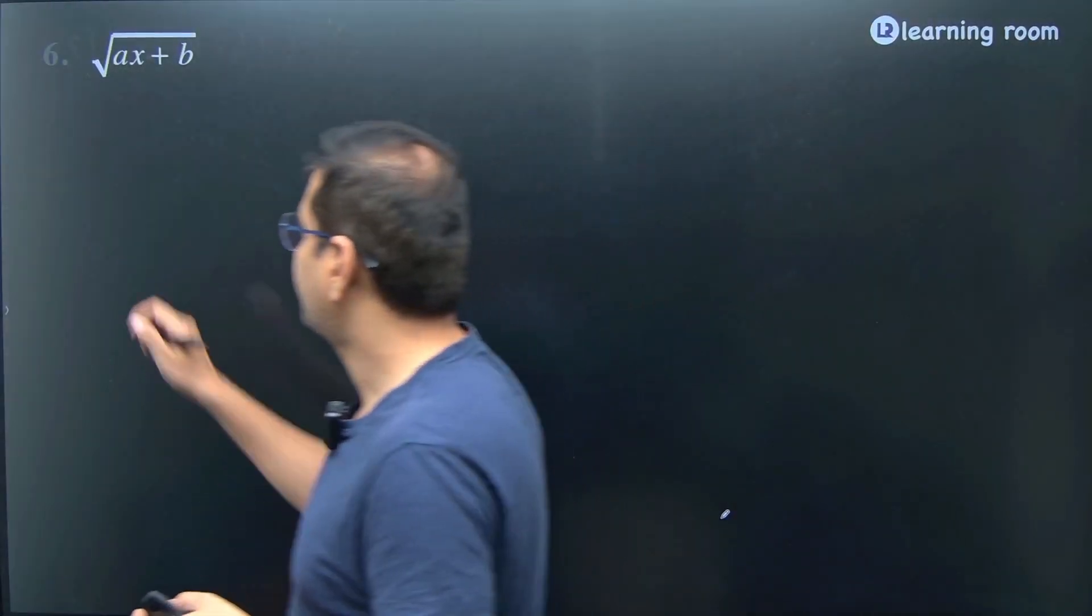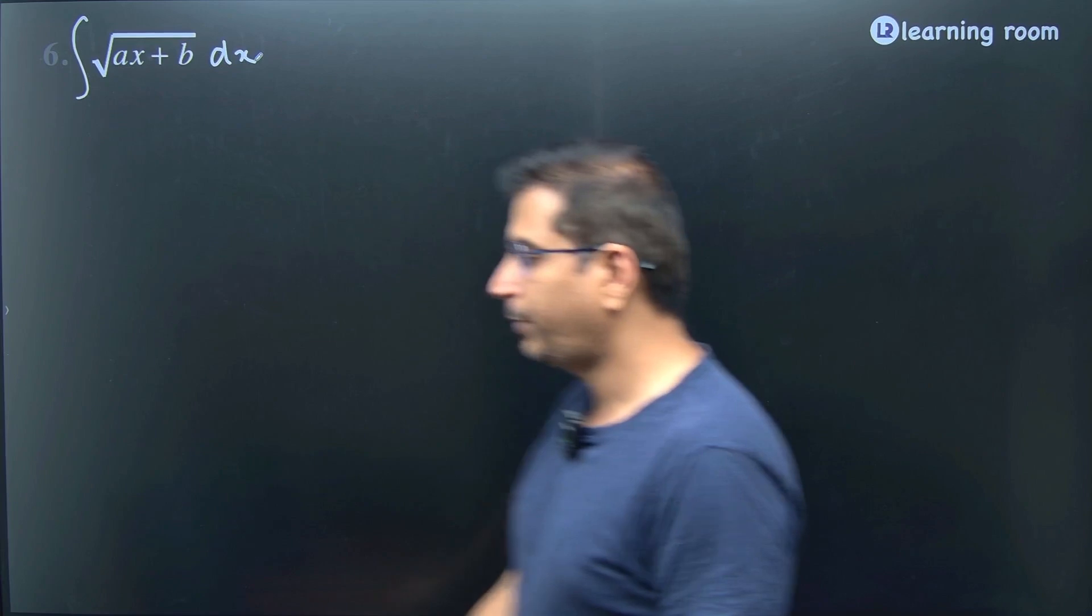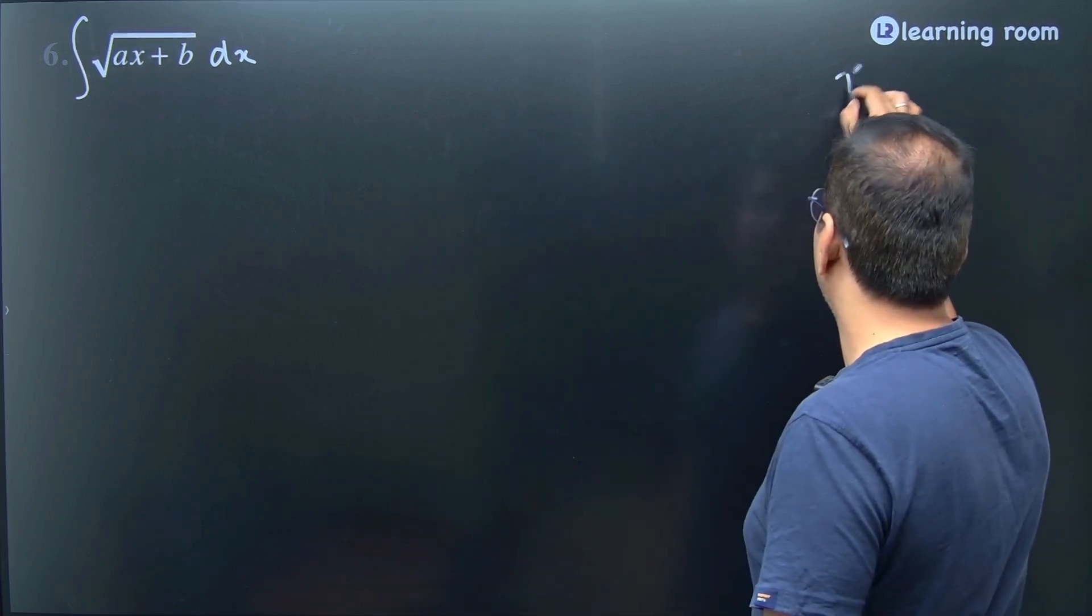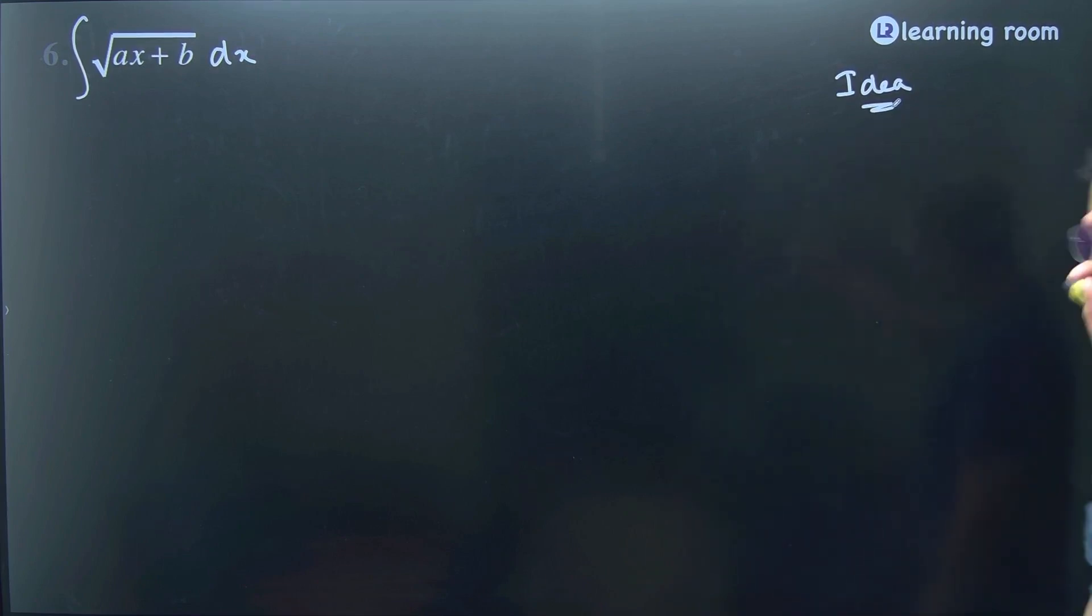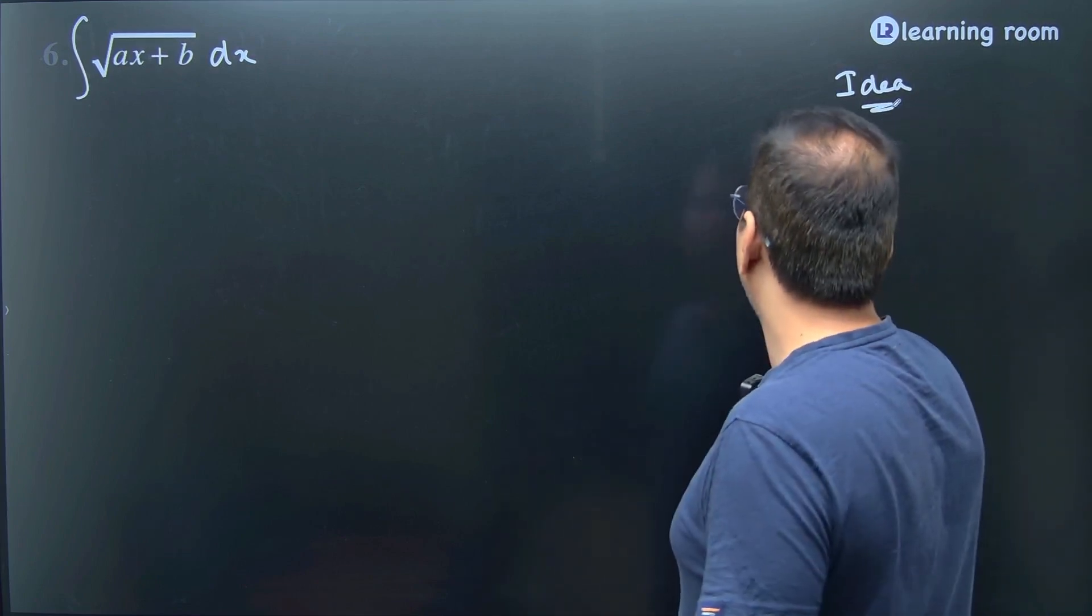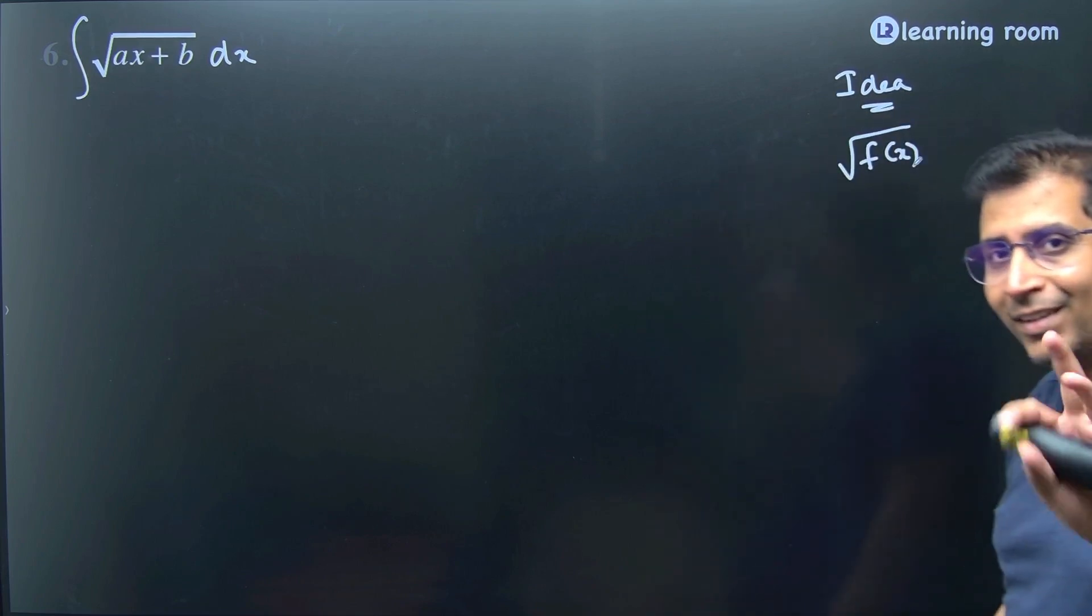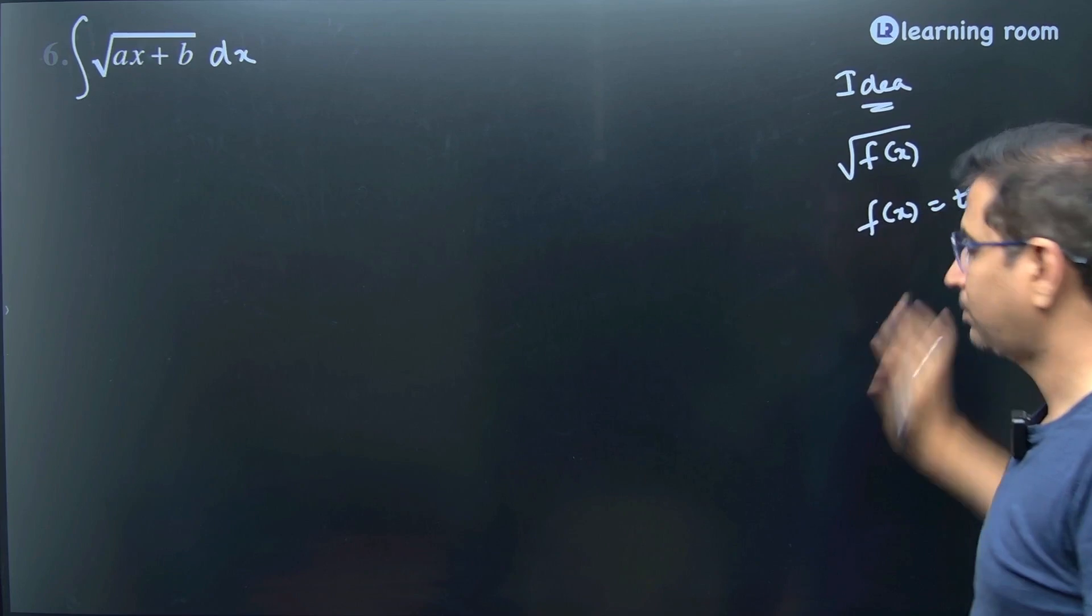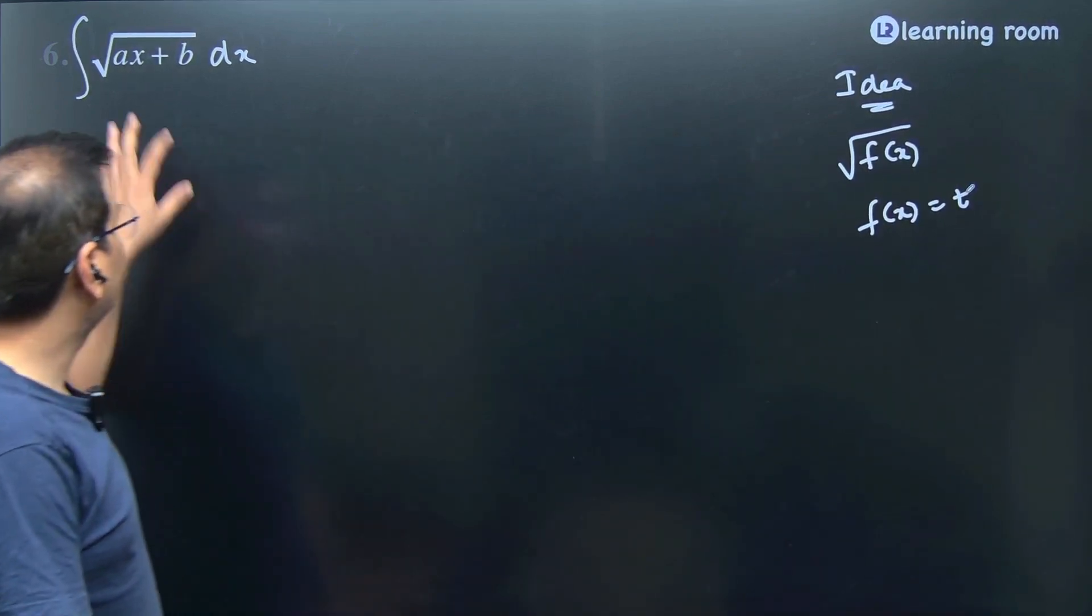Now we'll do the sixth question. It says integral of root of ax plus b times dx. The idea is, in most cases, wherever you have a square root of some function inside, that function inside the square root should be considered as t. So in this case, we will substitute ax plus b as t because that is the function inside the square root.